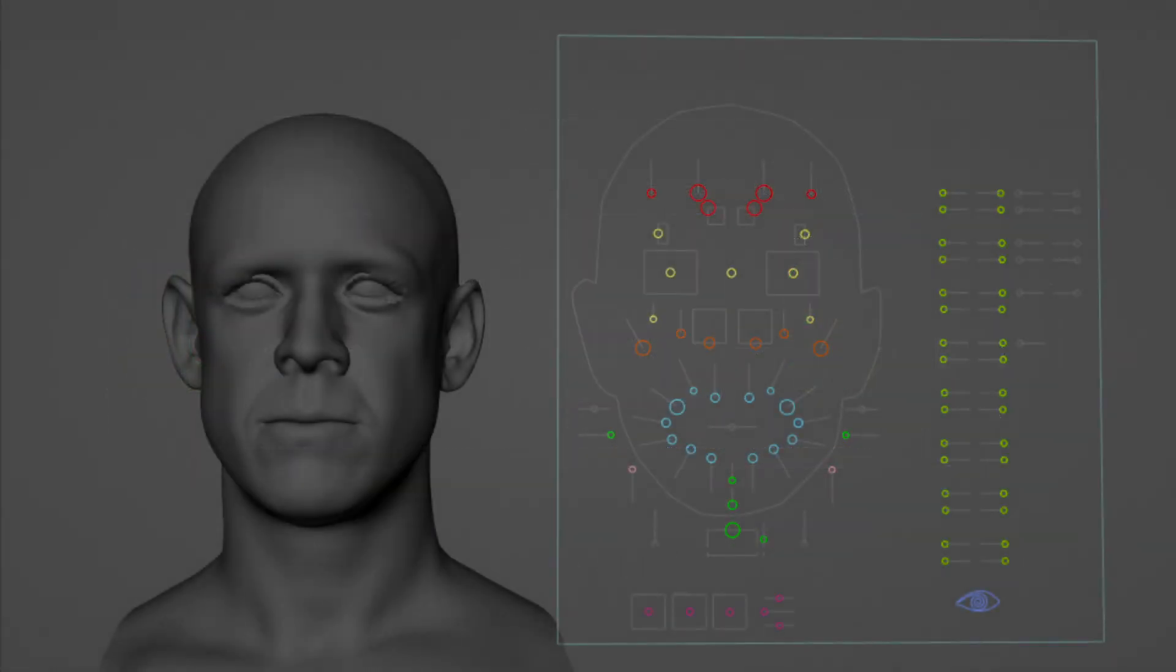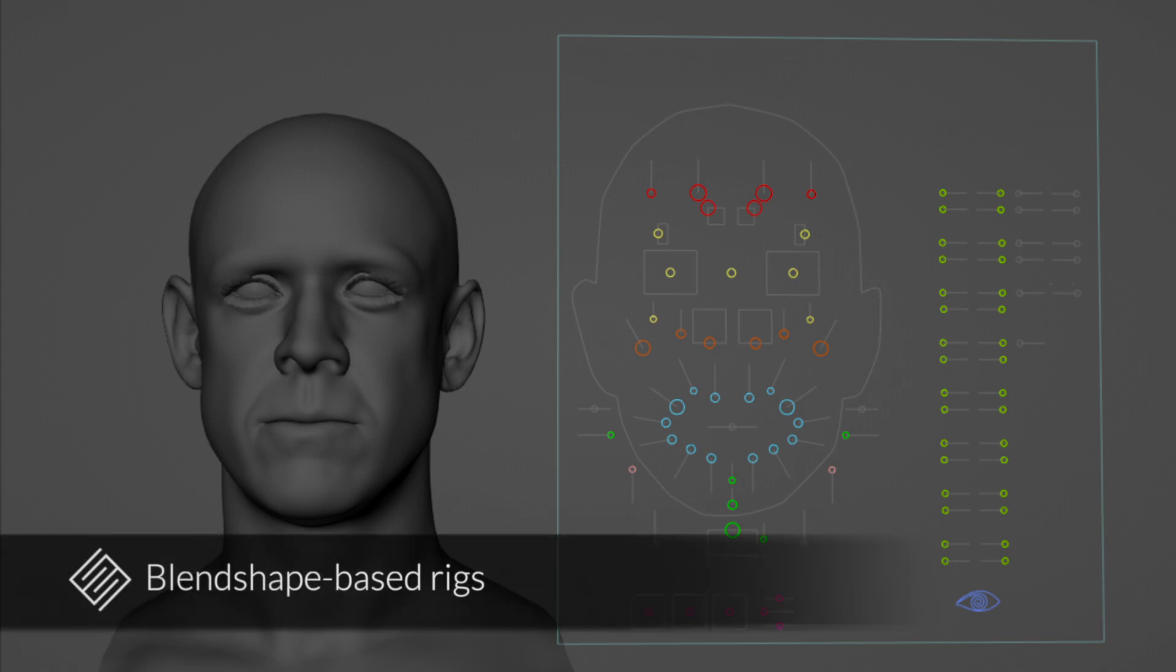The rig we use to develop and demonstrate this method is called FaceRig. It is an internally developed blend shape based facial rig at Electronic Arts. The proposed method makes no fundamental assumptions about the rig other than it being deterministic. This being said, a blend shape based rig has the advantage of lowering the dimensionality of the problem.